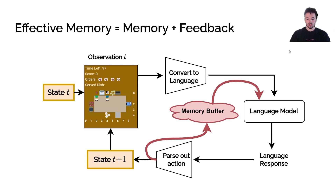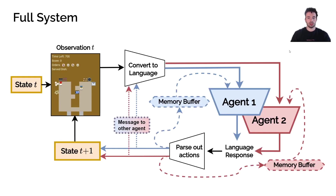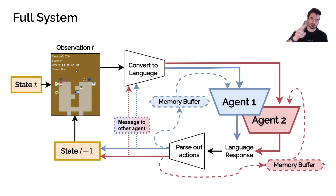This is just one agent, but if you look at the full system with both agents, it's more complicated. We start with the observation, convert it to language, and that same observation is fed to both agents. We replace the position and what each agent is holding, since they may be holding different things. Both agents then output a language response, which is used to parse out their high-level actions.